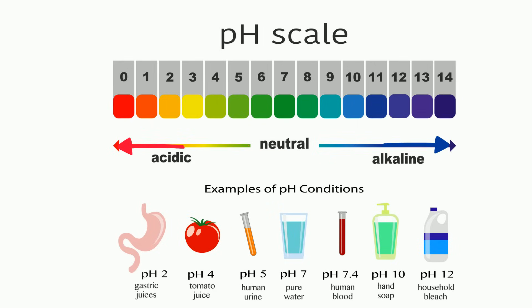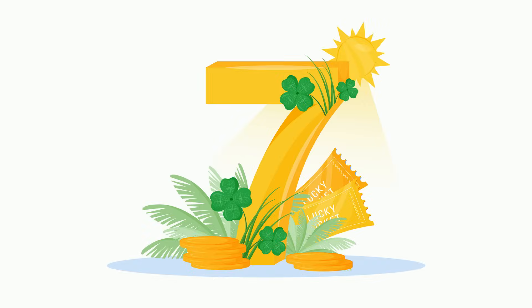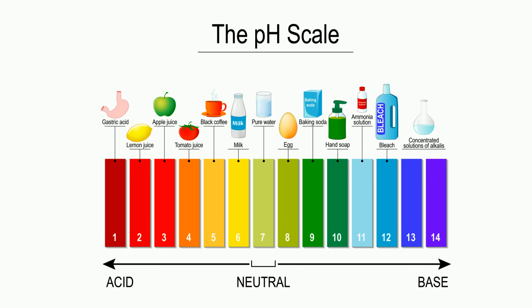But why 7? Because 7 is neutral. One of the first obstacles I had to overcome was remembering which number is neutral, which numbers are acids, and which are bases. So I use lucky 7, or '7 is heaven' on the pH scale, to remember that 7 is neutral. Any number below is an acid, and anything above is a base.